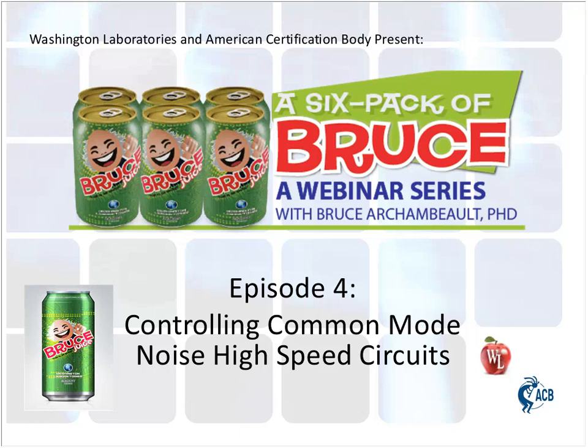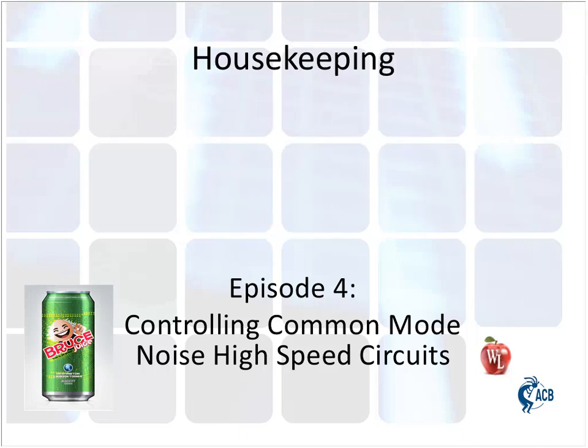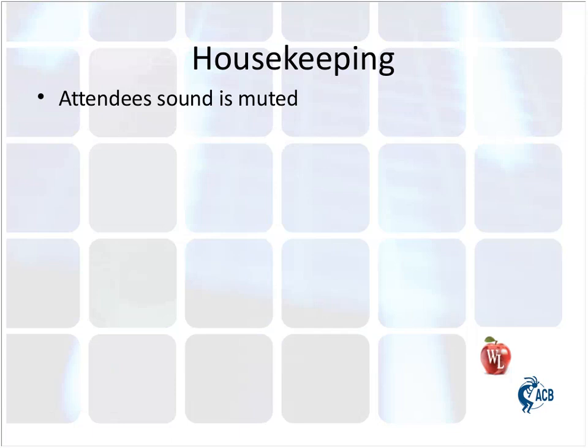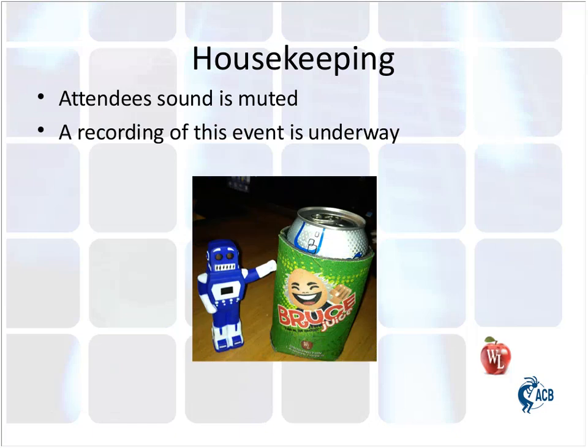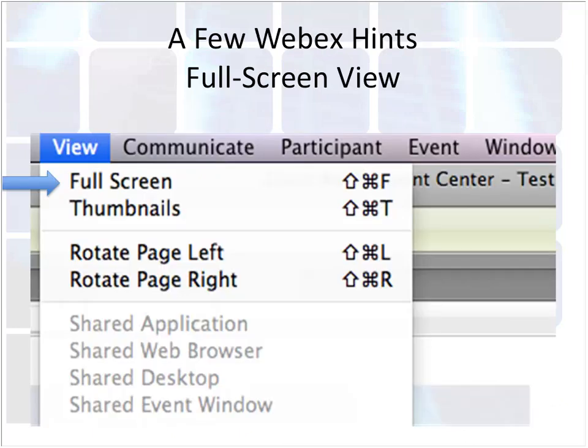Before we begin, I want to go over a few housekeeping details. First, I hope everyone is able to see the title slide on their computer. We have muted everyone's microphone to keep the meeting quality as high as possible. A recording of the presentation is underway and will be sent to all attendees. We will go through all questions at the end of the presentation as time permits. A full screen view may be preferred. Your selection at your computer can be done using the menu panel. In the menu on your screen, go to View and then select Full Screen.